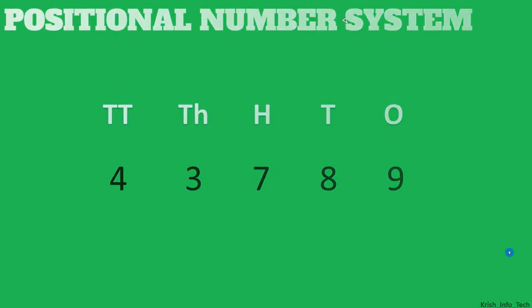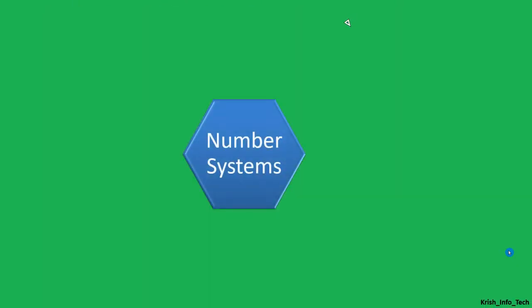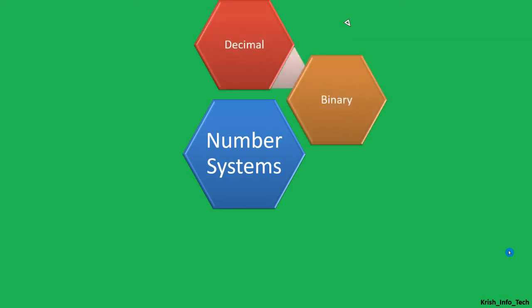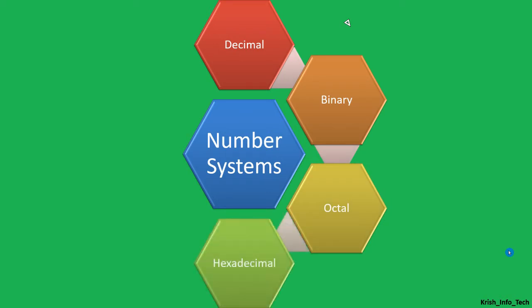Next, we are moving on to the types of positional number systems. We have 4 types: decimal number system, binary number system, octal number system, and hexadecimal number system. These are the 4 types of positional number systems available in computer number systems.